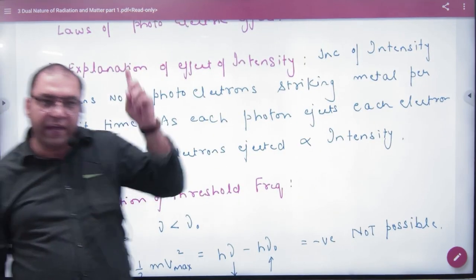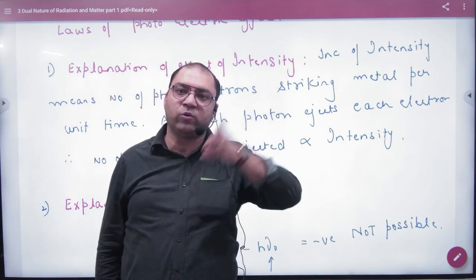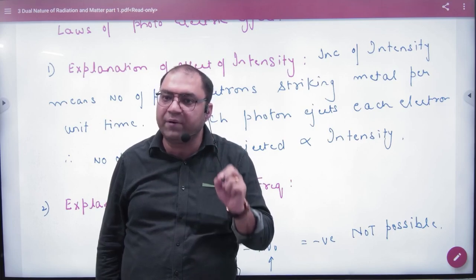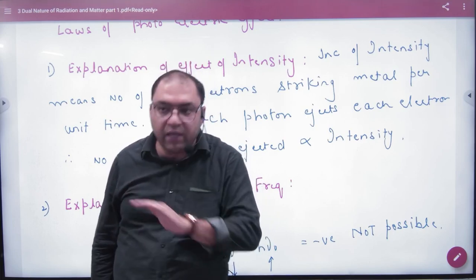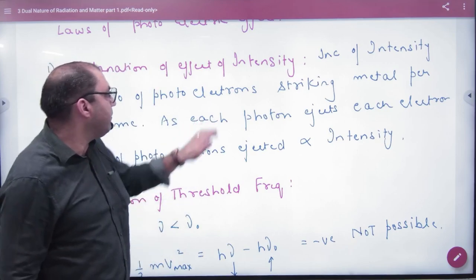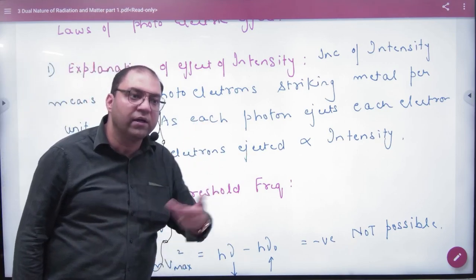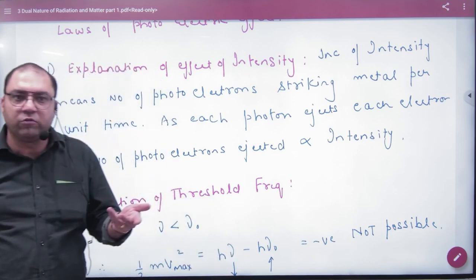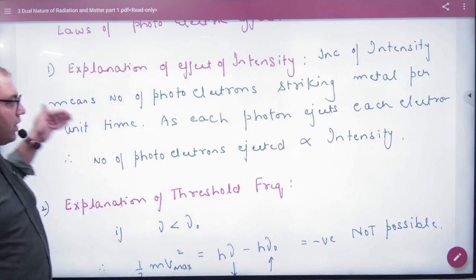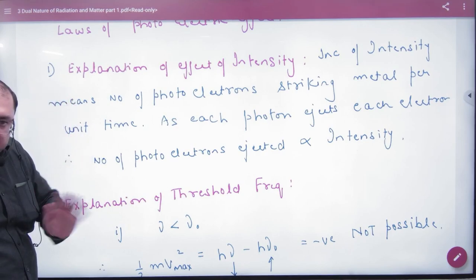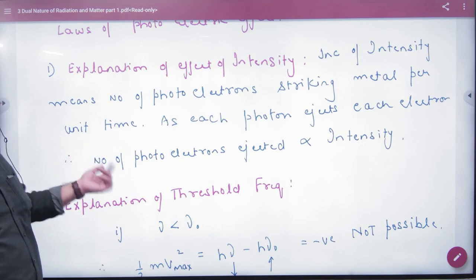Wave theory suggested that increasing intensity increases electron energy, but Einstein showed this is incorrect. Intensity means the number of photons per second, not the energy per photon. Increasing intensity doesn't increase the energy hν of individual photons, which is why this law is explained.